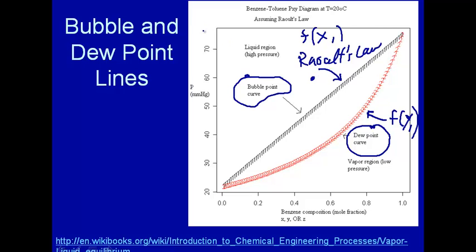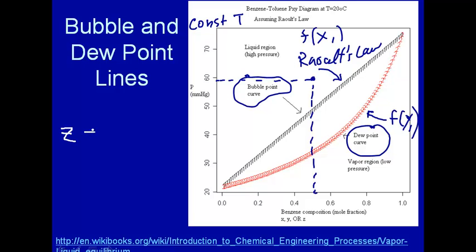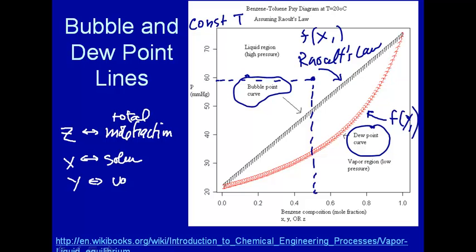We're assuming constant temperature. For a two-component system, we have three degrees of freedom, reduced to two by holding temperature constant, so the two degrees of freedom are pressure and composition. A new symbol Z is used — as many textbooks do — where Z corresponds to the total mole fraction, combining both liquid and vapor phases. So x is the mole fraction in the liquid, y corresponds to vapor, and Z corresponds to the total mole fraction of a particular component.